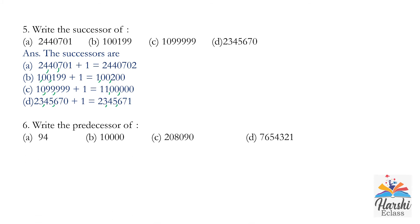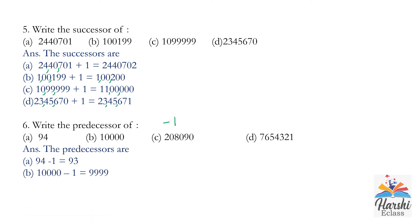Sixth question: write the predecessor of four given numbers. To find the predecessor, subtract 1. A: 94 minus 1 equals 93. B: 10,000 minus 1 equals 9,999. C: 2,08,090 minus 1 equals 2,08,089. D: 76,054,321 minus 1 equals 76,054,320. That is how we find the predecessor of the given numbers.